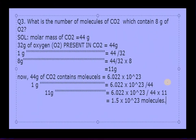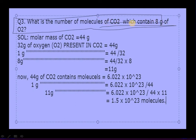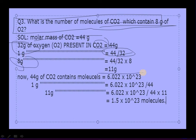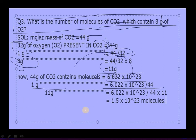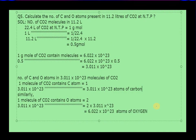Now find the number of electrons per molecule. Carbon has atomic number 6, so 6 electrons; hydrogen has atomic number 1 and there are 4 hydrogen atoms, so 4 electrons. Total electrons per methane molecule = 6 + 4 = 10 electrons. Multiply the number of molecules by 10 to get total electrons. Next question: how many molecules of CO₂ contain 8 grams of oxygen? In CO₂, the mass of O₂ is 32 grams. So 44 grams CO₂ contains 32 grams oxygen. For 8 grams of oxygen: 44/32 × 8 = 11 grams of CO₂. Then: molecules = (11/44) × 6.022 × 10²³ = 1.5 × 10²³ molecules.